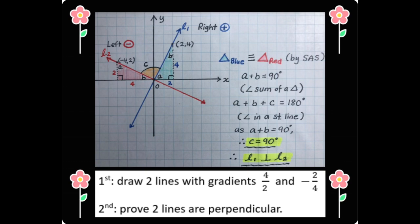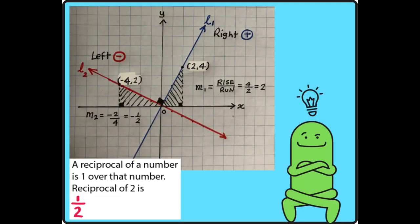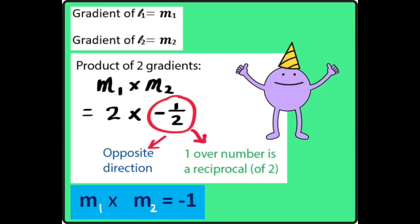So we know now that two lines are perpendicular. Gradient of line 1, M1, is 2. Gradient of line 2, M2, is negative half, which is a negative reciprocal of 2. As a reciprocal of 2 is half. When we look at product of 2 gradients, M1 times M2 is 2 times negative half, which is negative 1.